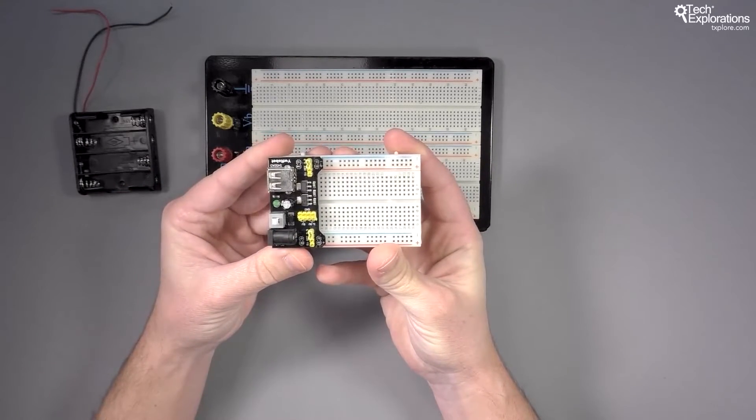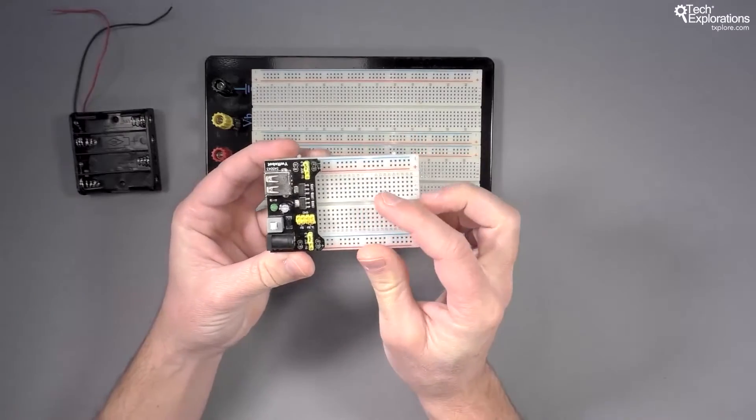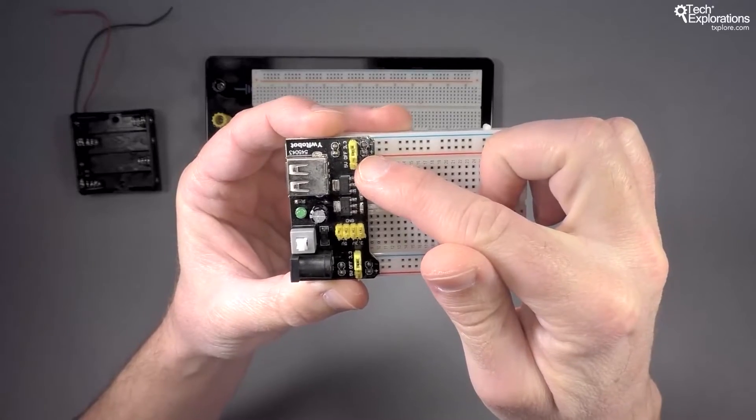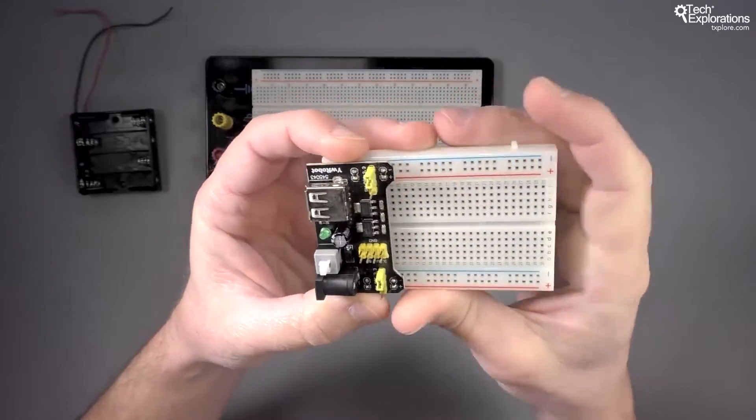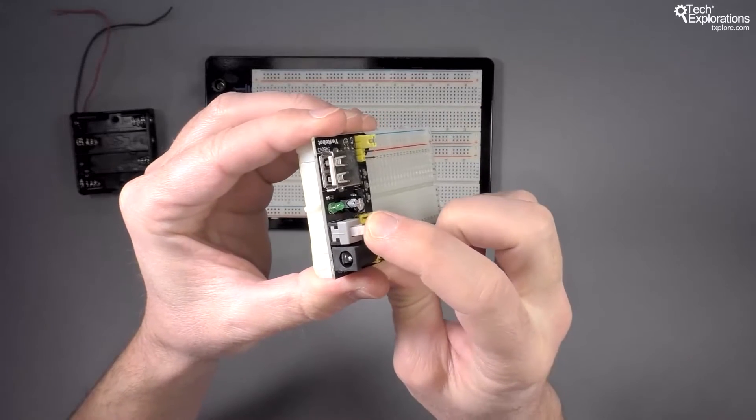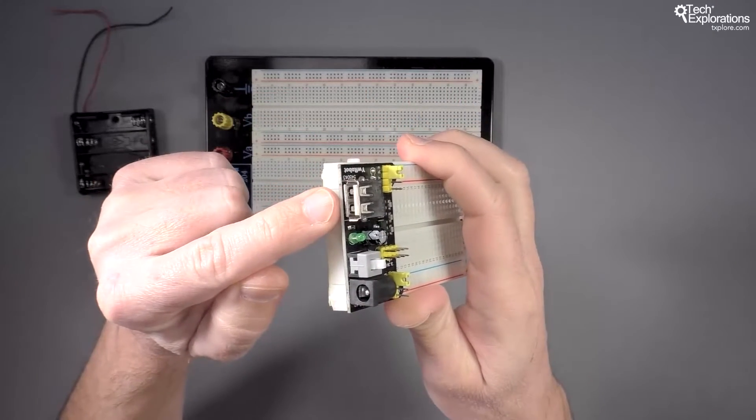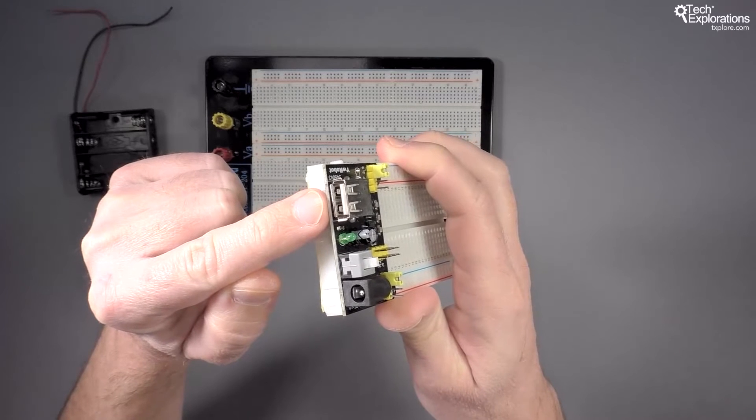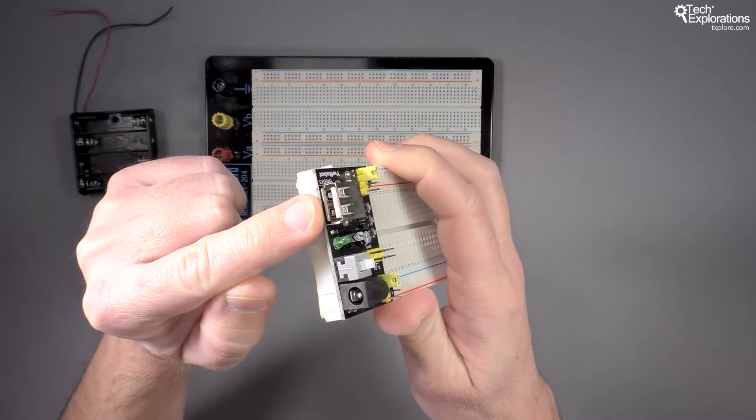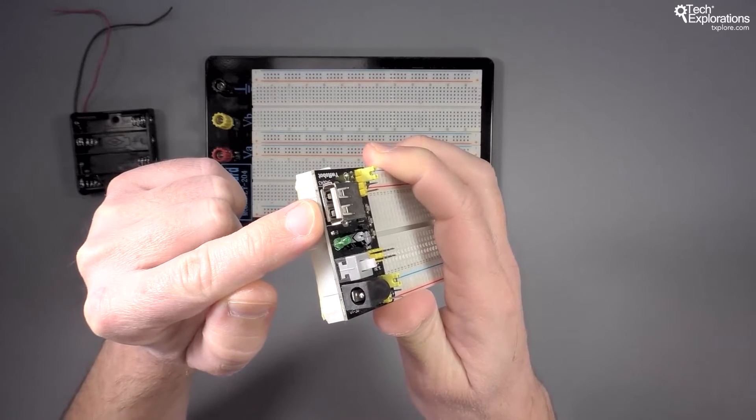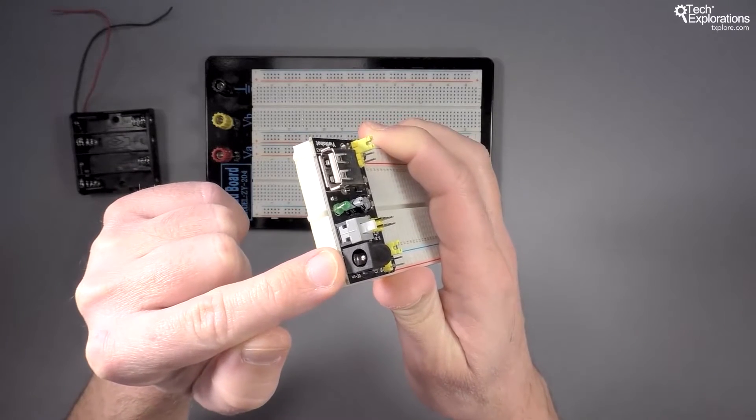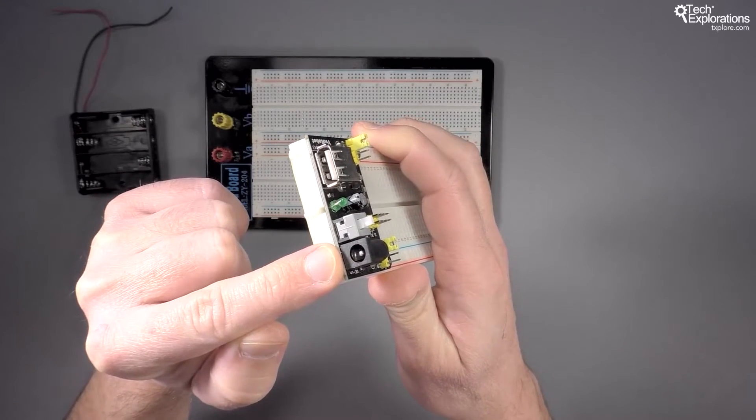The nice thing about that is it provides on the board 3.3 or 5 volt outputs, so you can choose your rating. It's got a switch on it so you can turn power on and off. You can power it from USB, so any USB adapter or even your computer can provide power to your circuits. I would recommend a USB adapter, not your computer. And you can power it from a barrel connector power supply lead, very nice and handy.